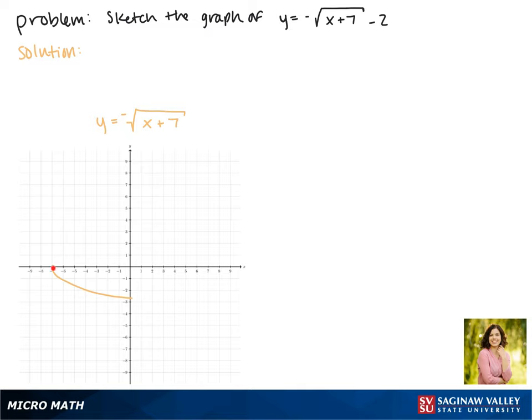So that now it passes through the point. Now because on the outside we're subtracting 2, that moves our function down two spaces.